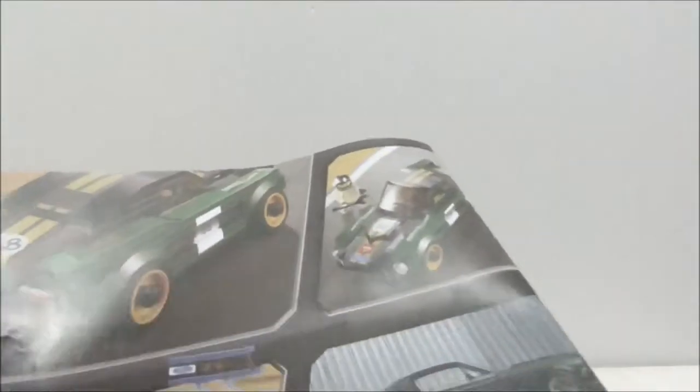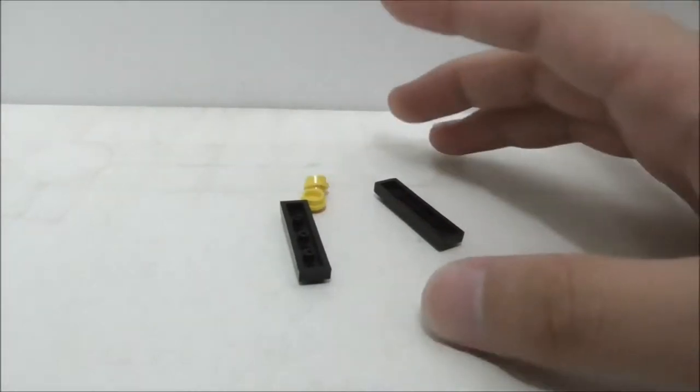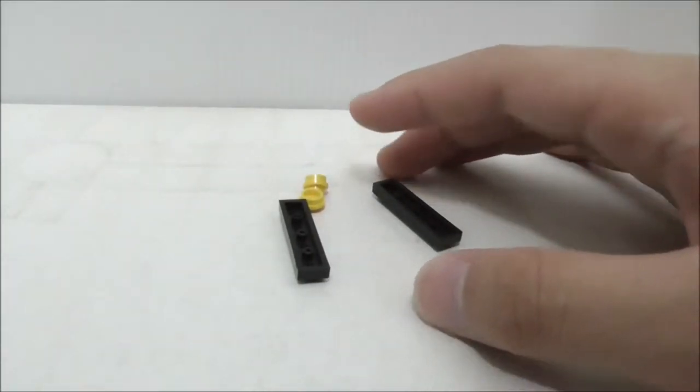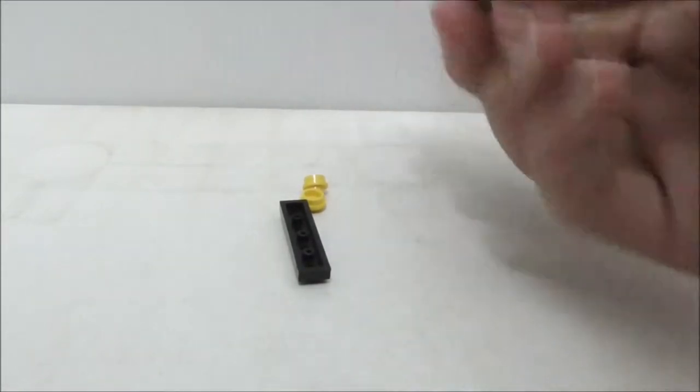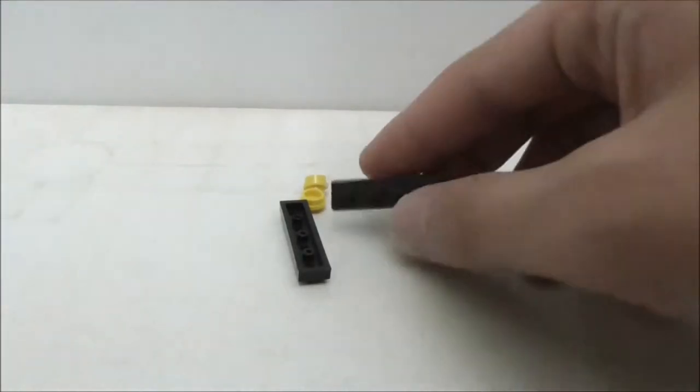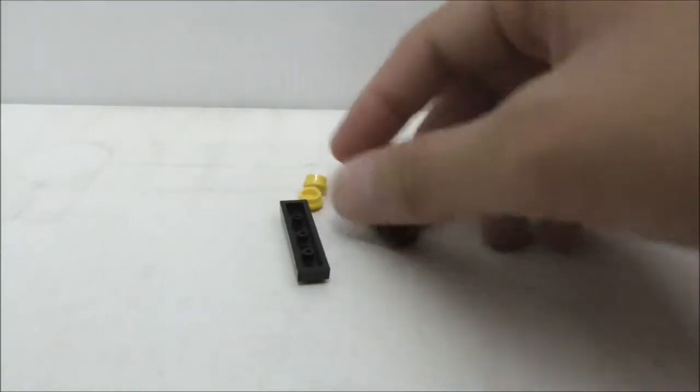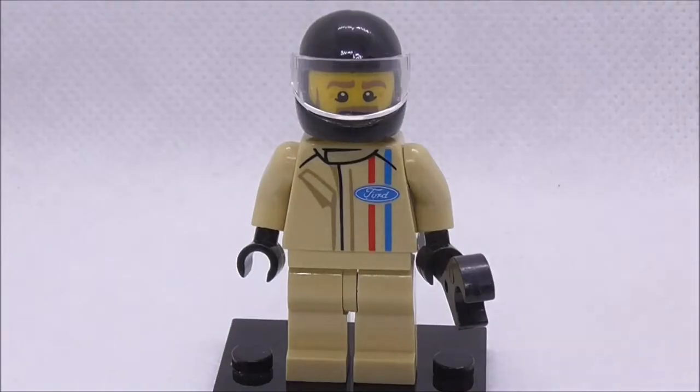So these are the extra pieces right here. They are here because of the instruction mistakes. Yeah, they have put in the wrong pieces and they didn't bother taking these out, so they are here. But yeah, aside from that, that's pretty much it for the extra pieces.